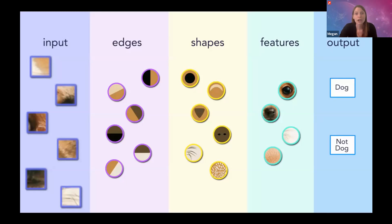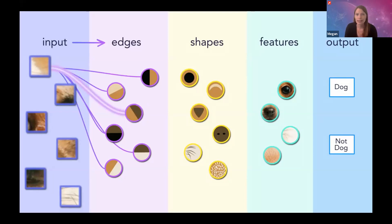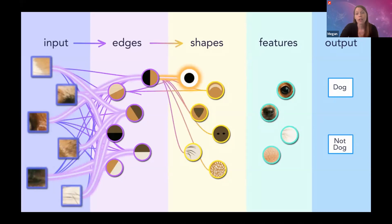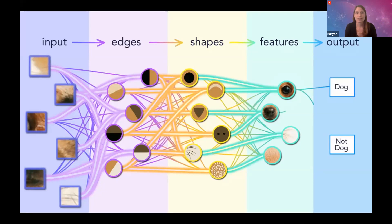We can ask our neural network to check for more and more complicated pieces of the picture. We can start with something simple like just edges — the neural network checks for edges, and when it sees a certain type of edge, that pathway lights up. Then we can ask whether any of these edges add up to a shape like a circle or a triangle. From all that information, we can see if those shapes and edges add up to a feature like an eye or a nose. Finally, the neural network uses all of that information to figure out if this is a picture of a dog or not a dog.